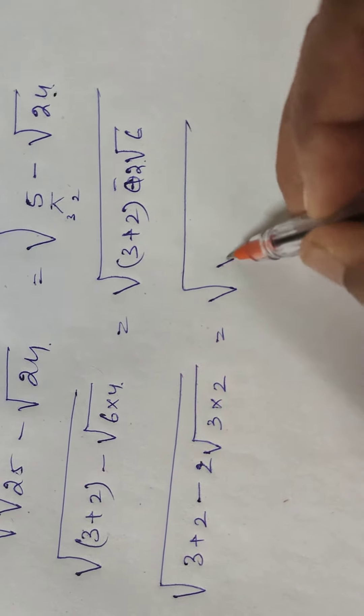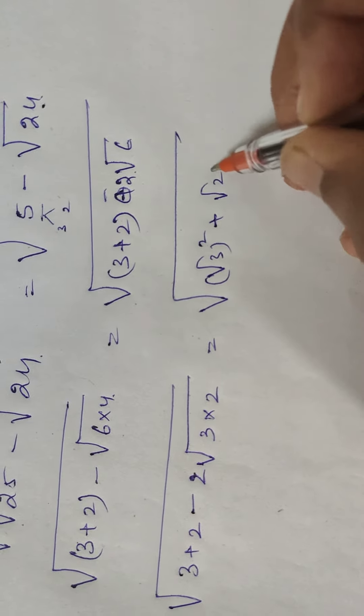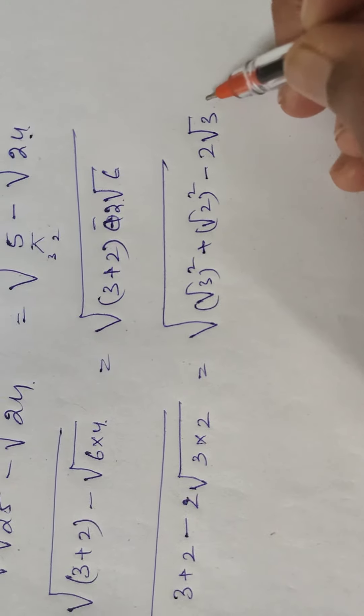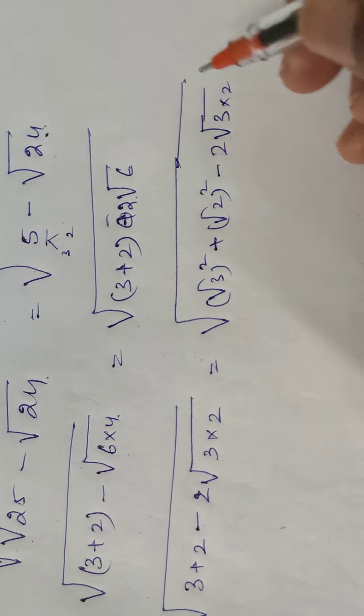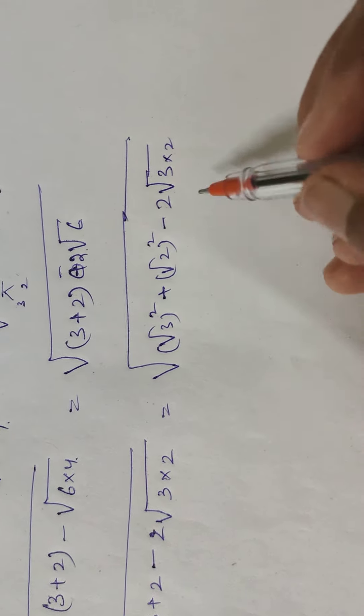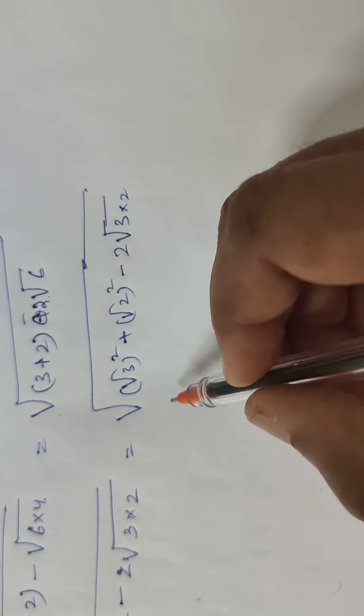So how it will be: under root of root 3 whole square plus root 2 whole square minus 2 root 3 into root 2. Okay, so anyways this represents the same number. Now if you see this, it is in the form of a square plus b square minus 2ab.